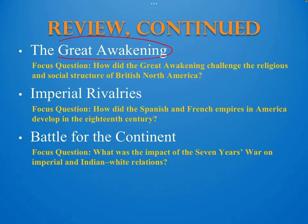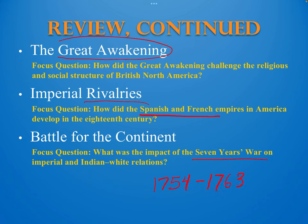Parts of the chapter we didn't discuss in class but that you should still review include the imperial rivalries between the Spanish and the French, and the battle they had in the French and Indian War — or what Europeans called the Seven Years' War. This is where the British and their Indian allies fought against the French and their Indian allies. This war happened between 1754 and 1763, and even though it lasted a little over seven years on the American continent, we know it as the French and Indian War.